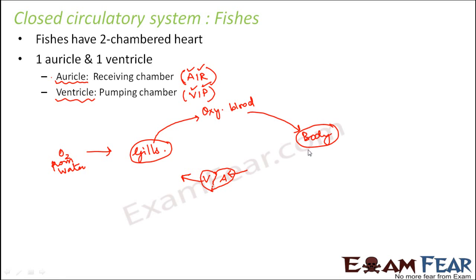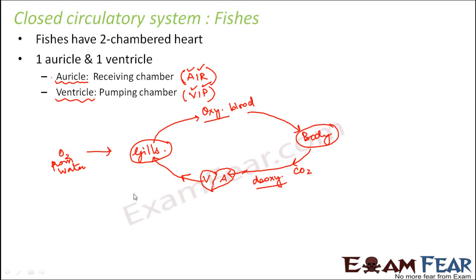Each cell of the body undergoes cellular respiration, producing carbon dioxide. This carbon dioxide is carried in the blood as deoxygenated blood back to the heart — specifically to the auricle chamber. From the auricle it passes to the ventricle, and from the ventricle the deoxygenated blood goes to the gills, where it receives oxygen again and is converted back to oxygenated blood. This cycle continues. Importantly, there is no separation of oxygenated and deoxygenated blood — it is all mixed up, as there is just one path of flow.